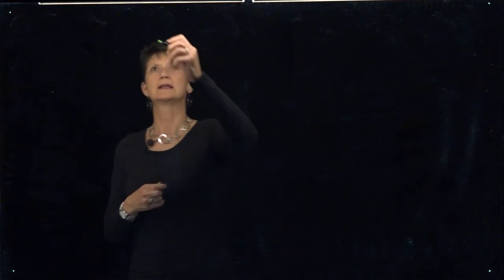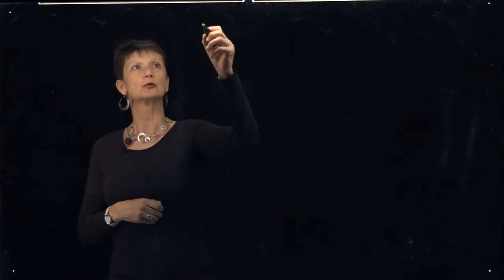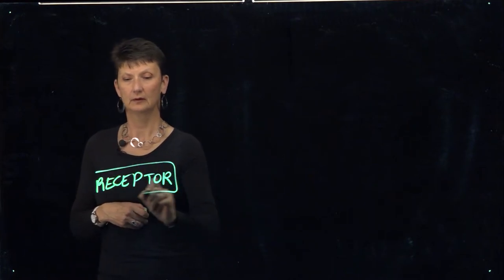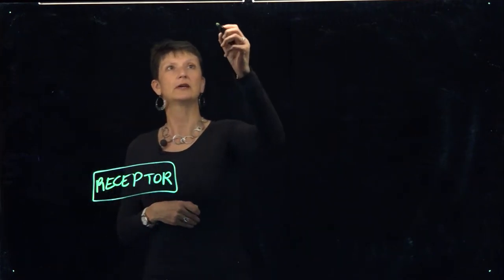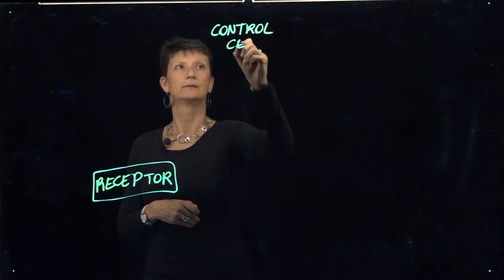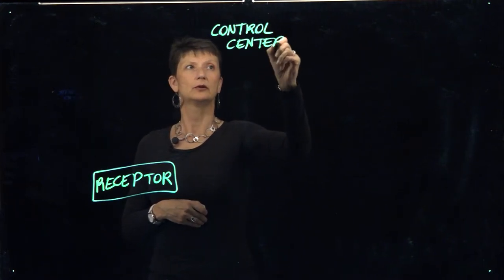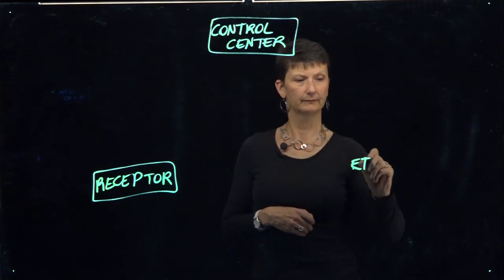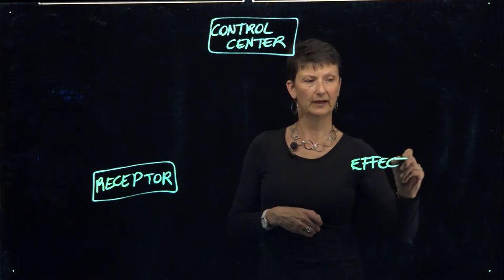I'm going to use CNM glass today to learn more about the homeostatic control mechanism. The homeostatic control mechanism consists of three main components: we're going to have a receptor, we're going to have a control center, and then we're going to have an effector or effectors.